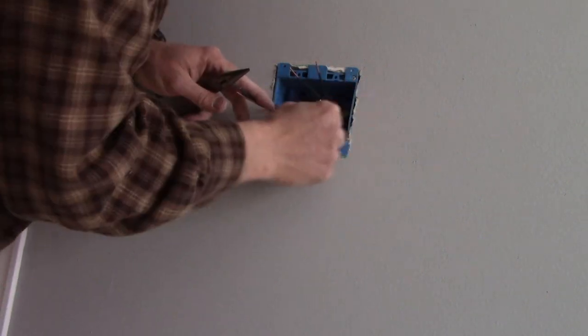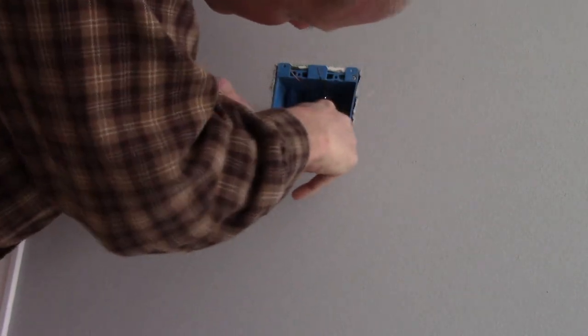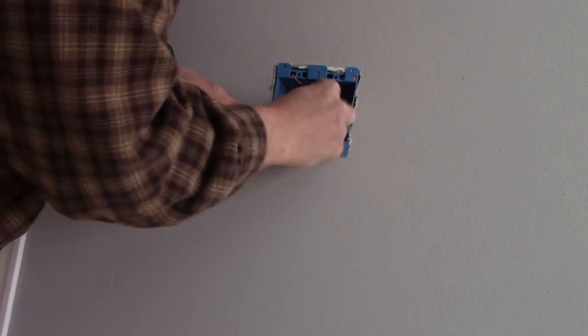And you want to make sure that they're completely seated and they're bottoming out in the end of the connector. All right. Let's get these ground wires out of the way. Tuck the lights in. The neutrals.